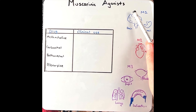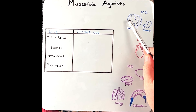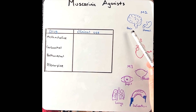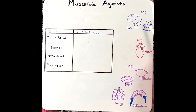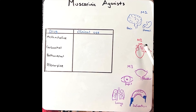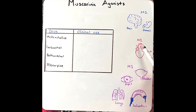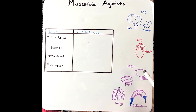M1 receptors are located throughout brain tissue and appear to play a role in cognition. M1 receptors are also located in the stomach and increase gastric secretion. M2 receptors are located in heart tissue and the sinoatrial node; therefore, activation of M2 receptors decreases heart rate.